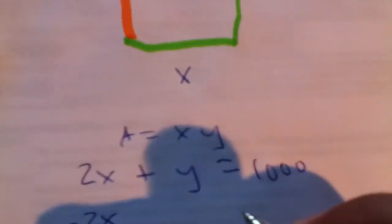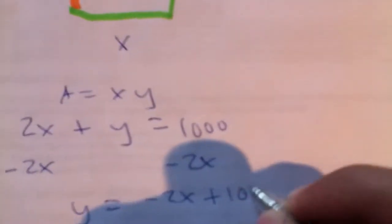Now, in this equation here, we're going to solve for y. So, we subtract 2x from both sides, and we get that y equals negative 2x plus one thousand.